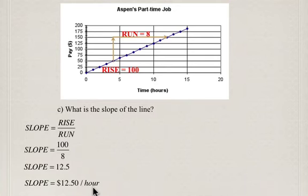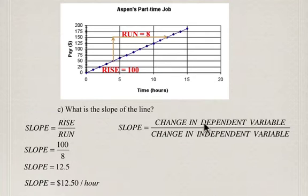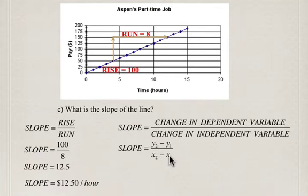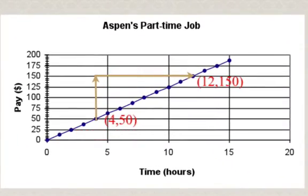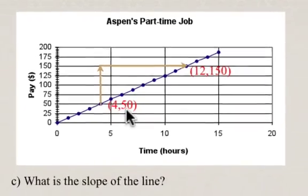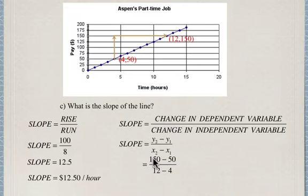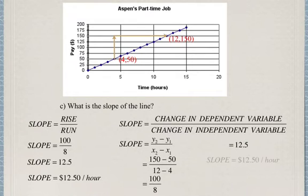You should recognize that this is the same thing as $12.50 per hour. So our slope is the exact same thing as our rate of pay — it's critical to understand that slope is rate. We can also look at this a different way: slope is the change in the dependent variable divided by the change in the independent variable, using the formula (y2 − y1) / (x2 − x1). Going back to our graph, the points are (12, 150) and (4, 50). Substituting: (150 − 50) / (12 − 4) = 100 / 8 = 12.5. This means the slope of the line equals $12.50 per hour. Slope is rate.